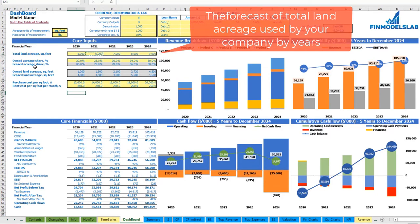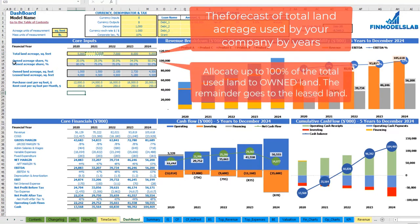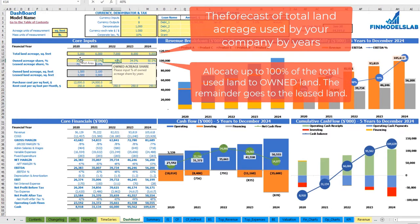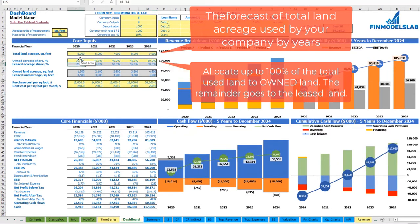The next step is to allocate this total acreage by owned acreage and leased or rented acreage — for example, 30%, 35%, 40%, 45%, and 50% for the owned portion. The rest will be leased. In the next section, you may see the absolute values of acreage in square feet based on this allocation and total acreage.